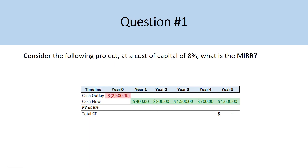So consider the following project. At a cost of capital of 8%, what is the modified internal rate of return? This is example one. In year zero we have a cash outlay of $2,500. In year one we receive $400, year two $800, year three $1,500, year four $700, and in year five $1,600. The calculation assumes the present value of the cash outlay doesn't need to be discounted since it's already in the present. For the cash inflows, we compound them out to year five dollars using an 8% discount rate.